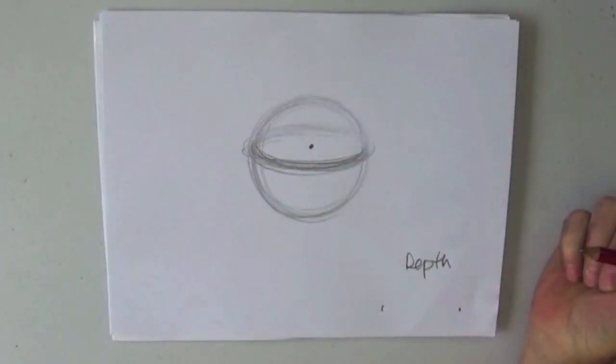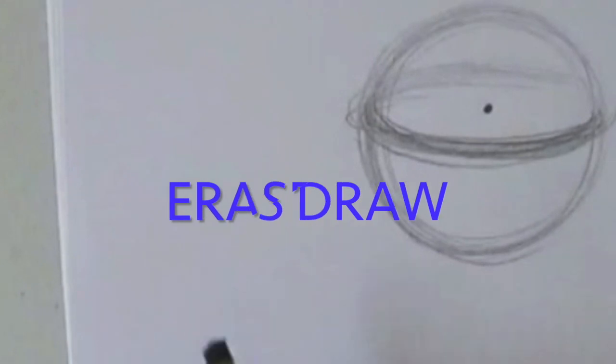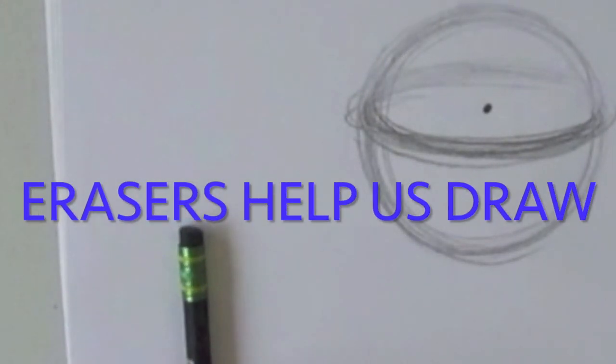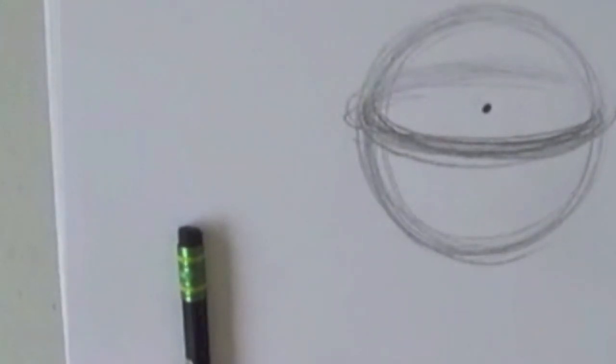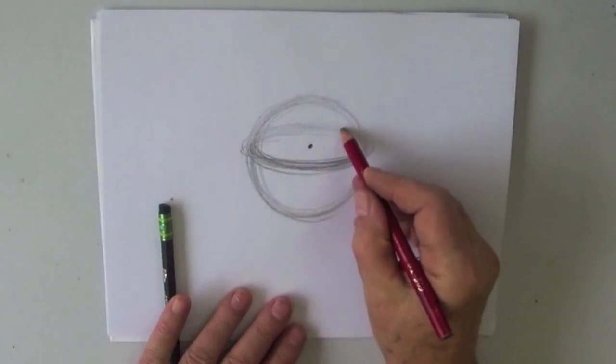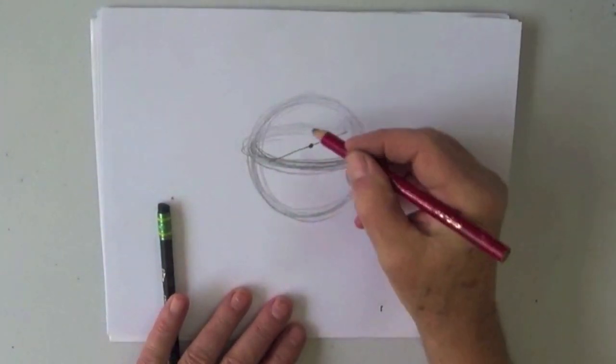Put a dot in the middle. Better get my little friend over here - erasers are a friend, they help us draw. Let me just put lines through this.